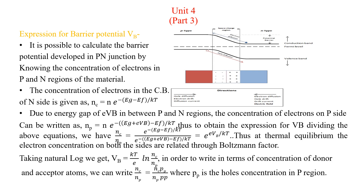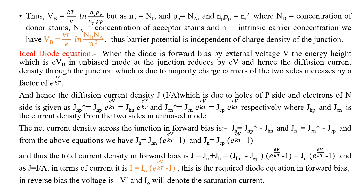We multiply and divide by pp in numerator and denominator. There is a slight printing mistake — the second subscript p is in subscript. So this derivation gives us the barrier potential expression. The expression is small but the mathematics requires careful understanding. Try to derive this expression on your own.